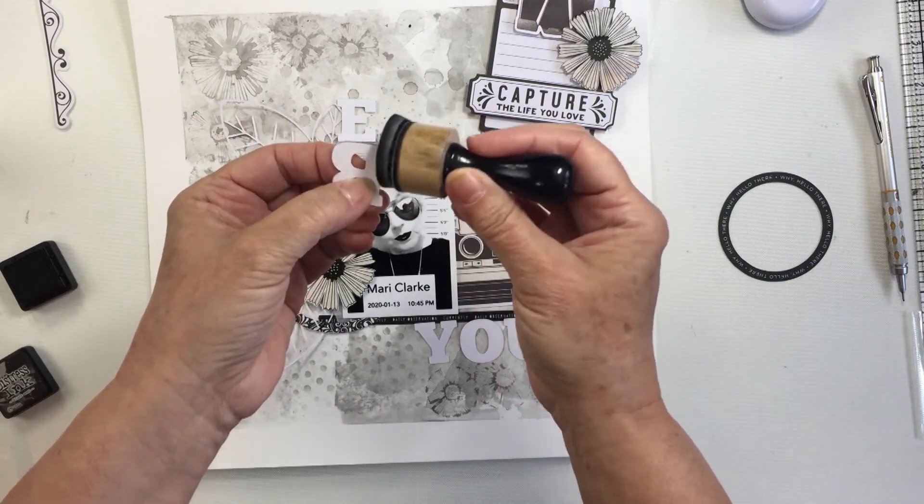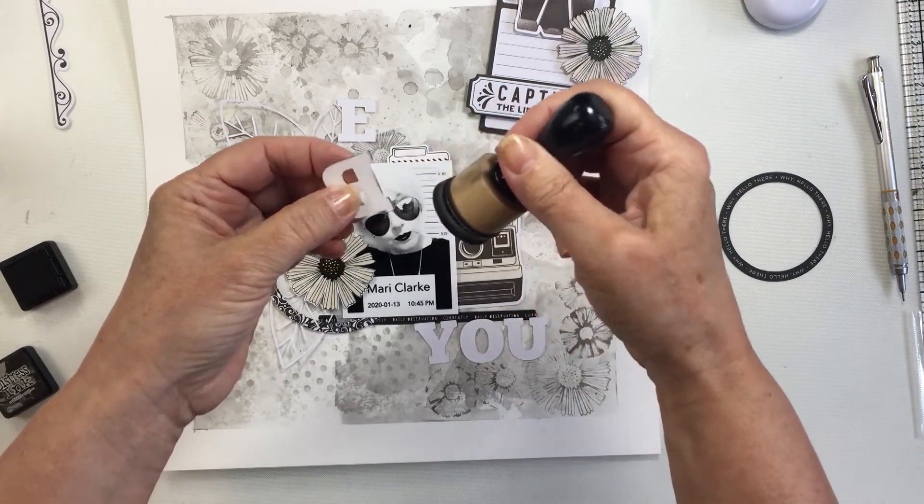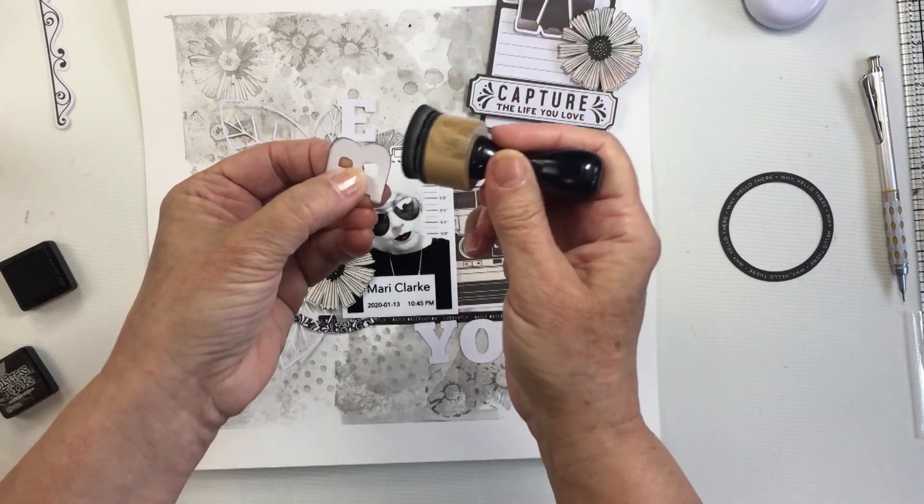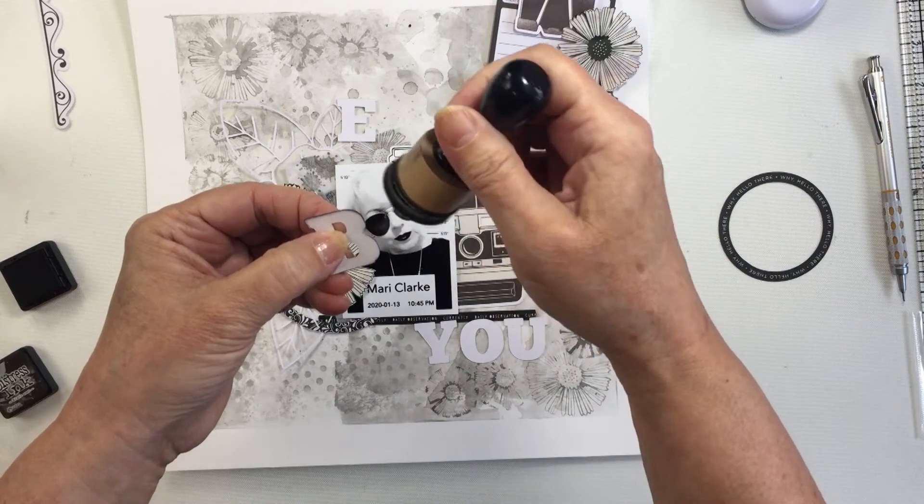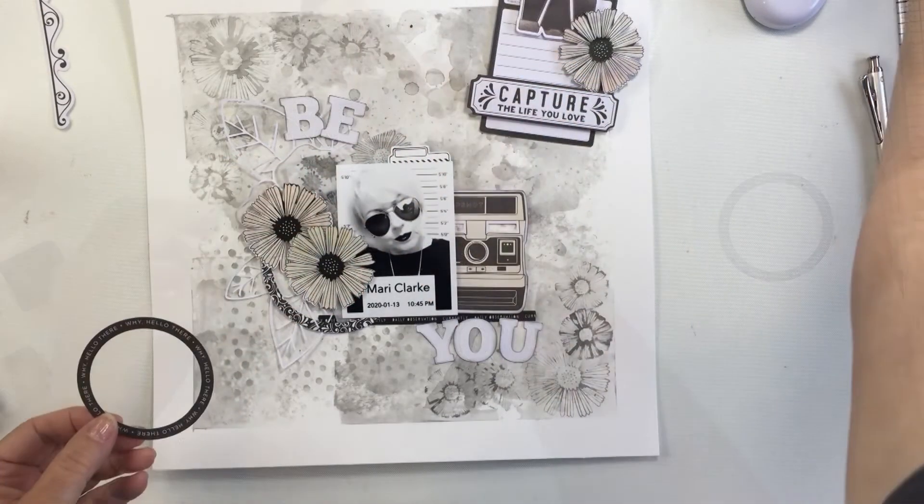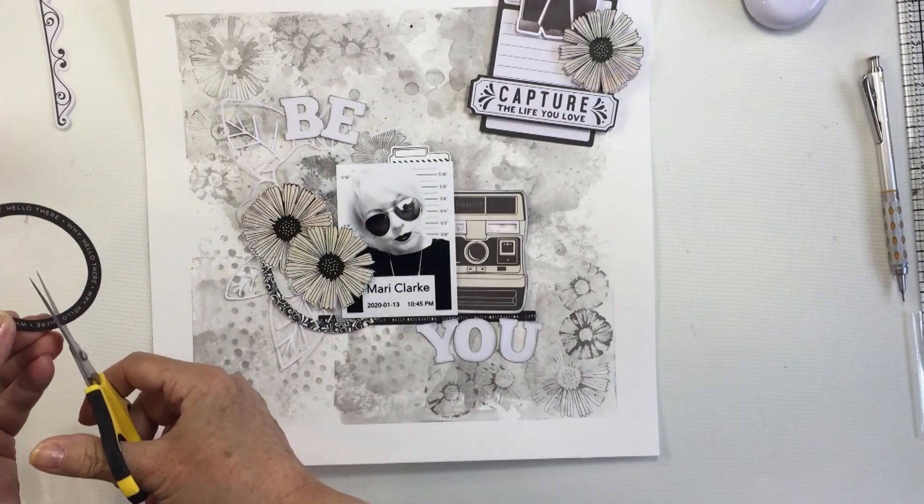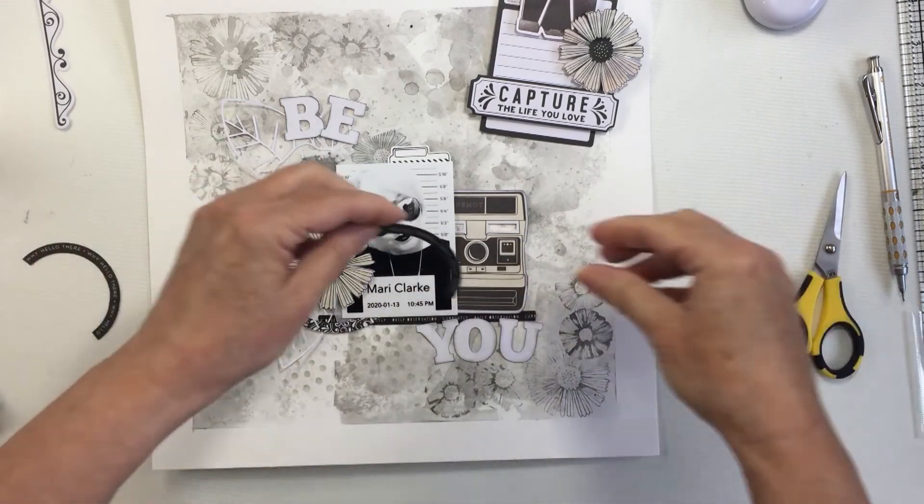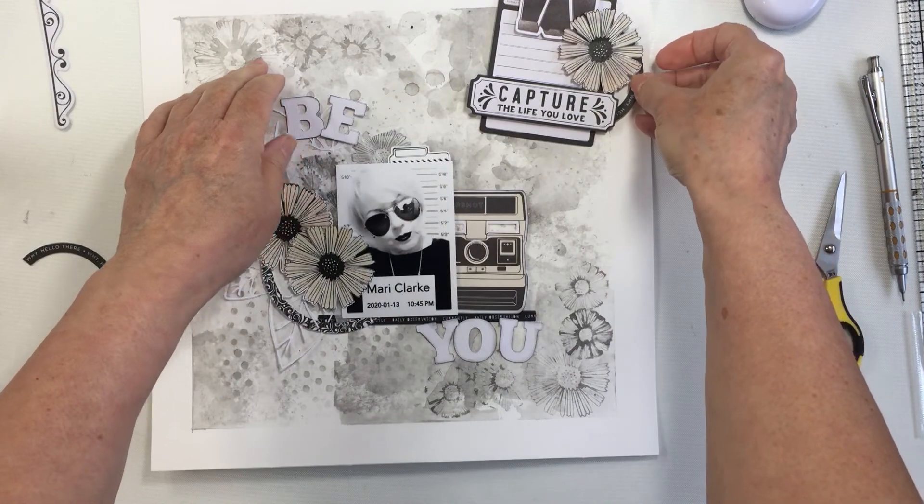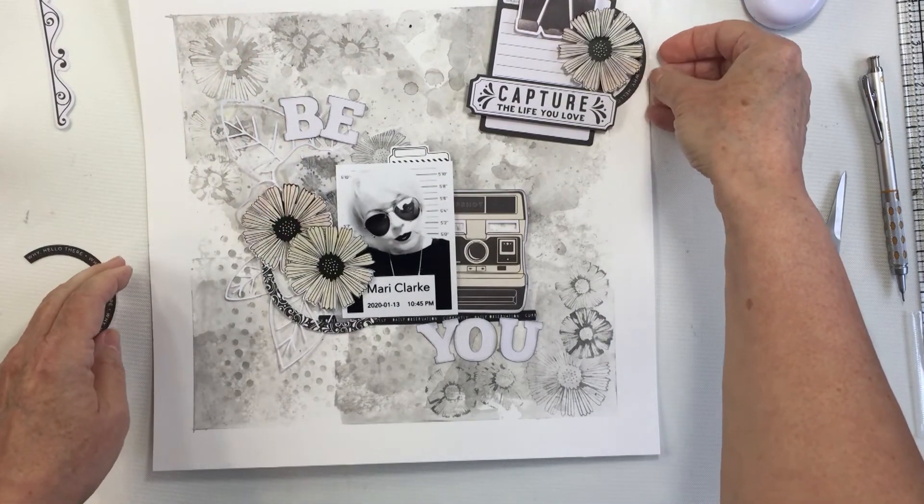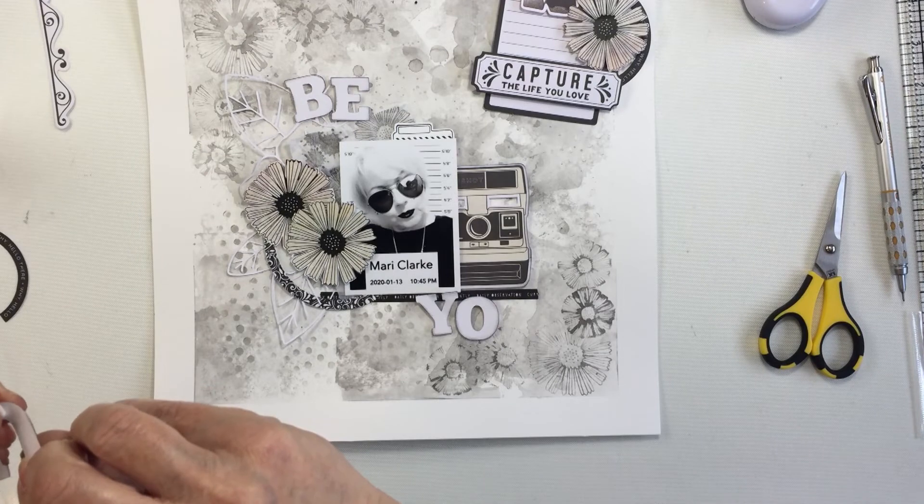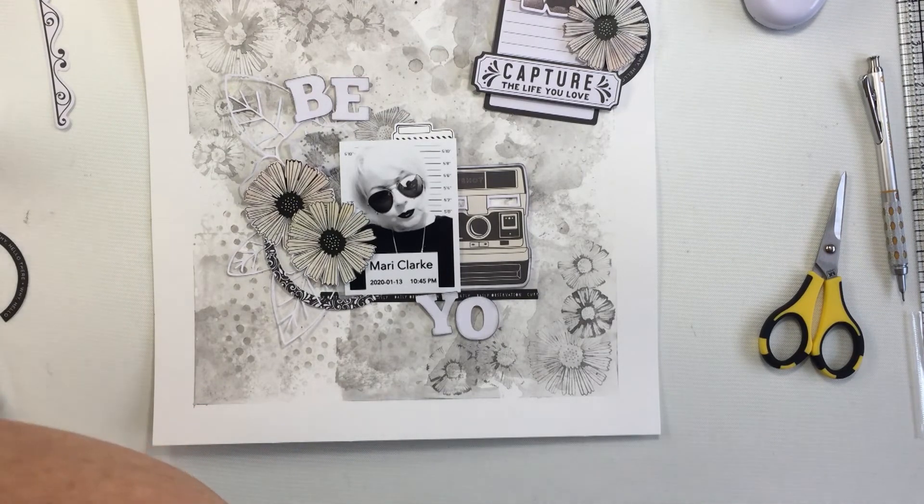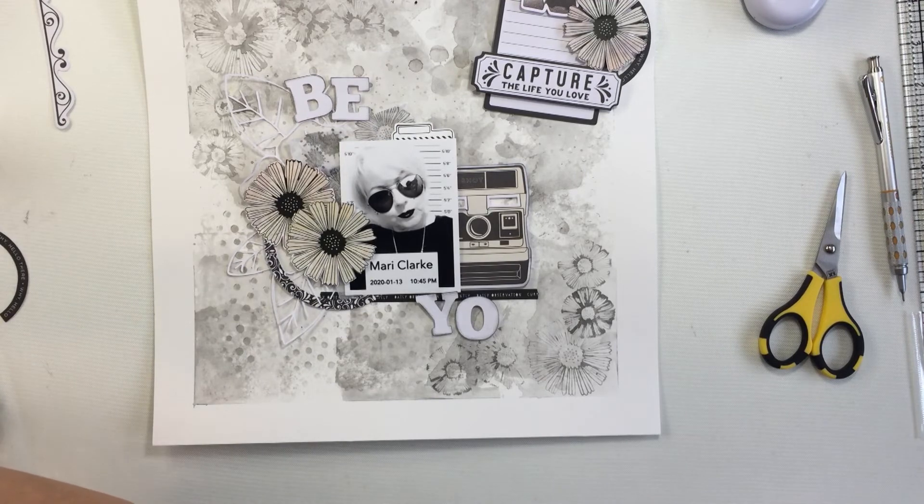I am using some black soot distress ink to ink up the edges of my alphas and this is part of the cut file as well. The cut file creates a title Be You on this layout. Now I did initially put that half circle over to the right of that but I am going to move that to the left side of that area and put another floral up there. You'll see that at the end.